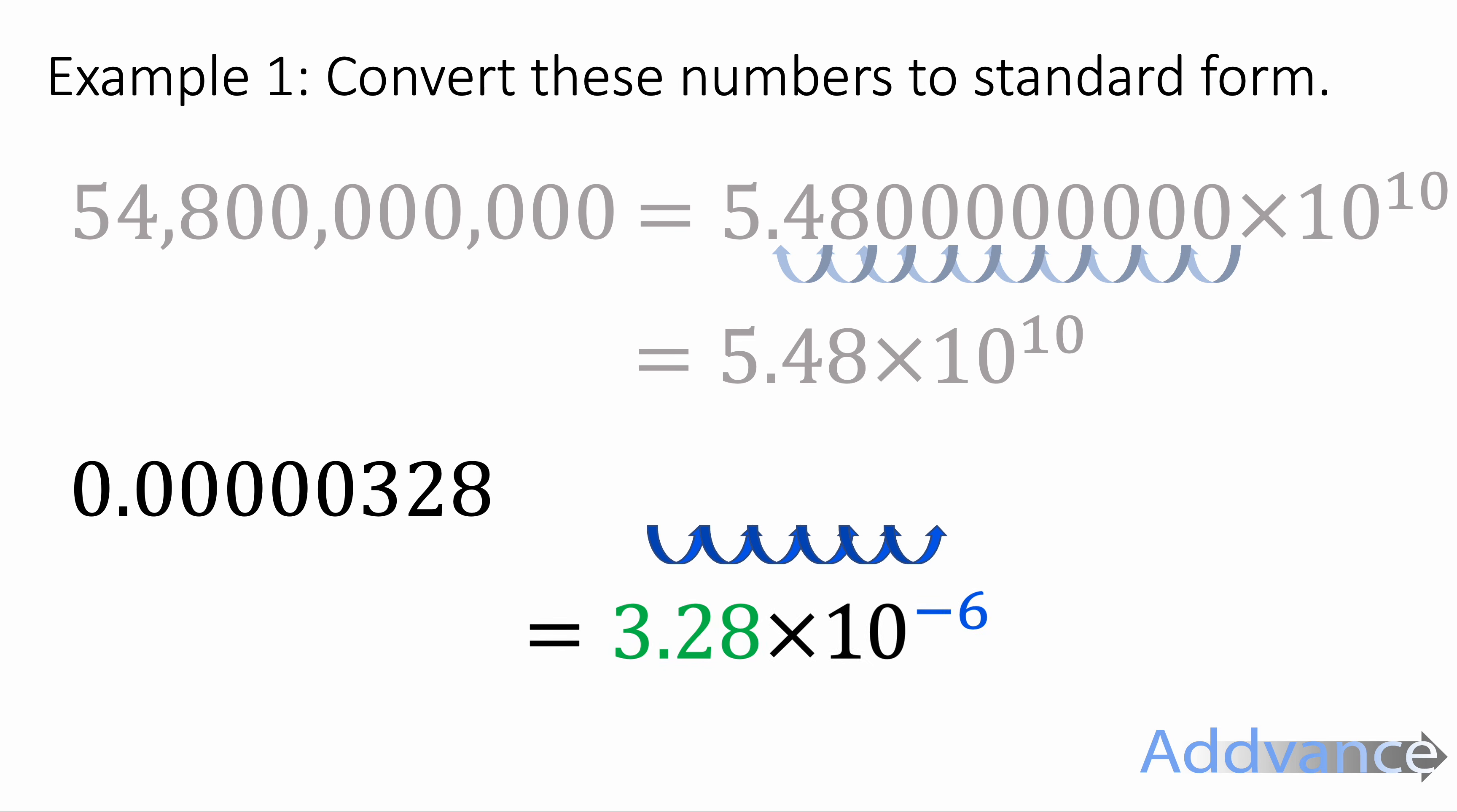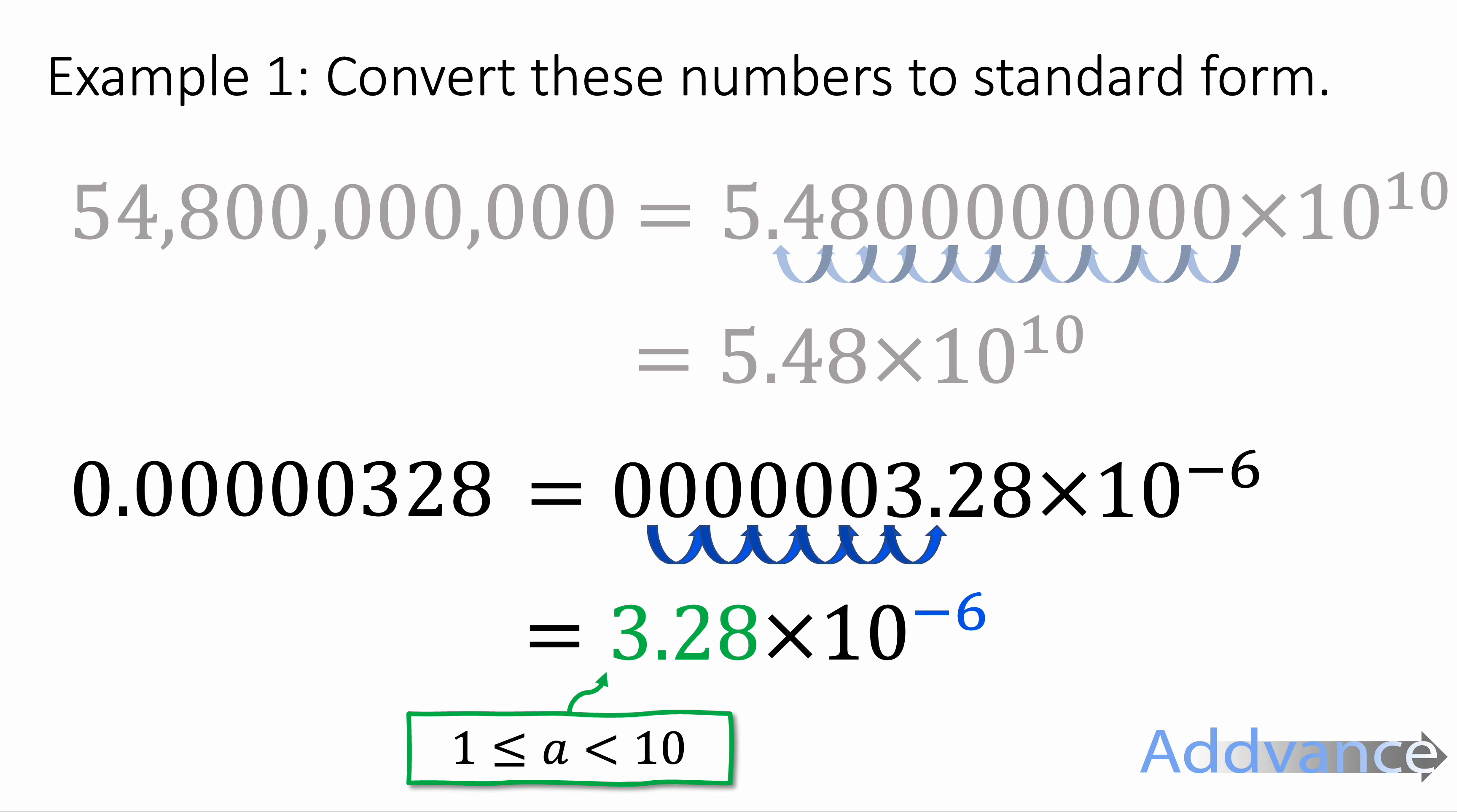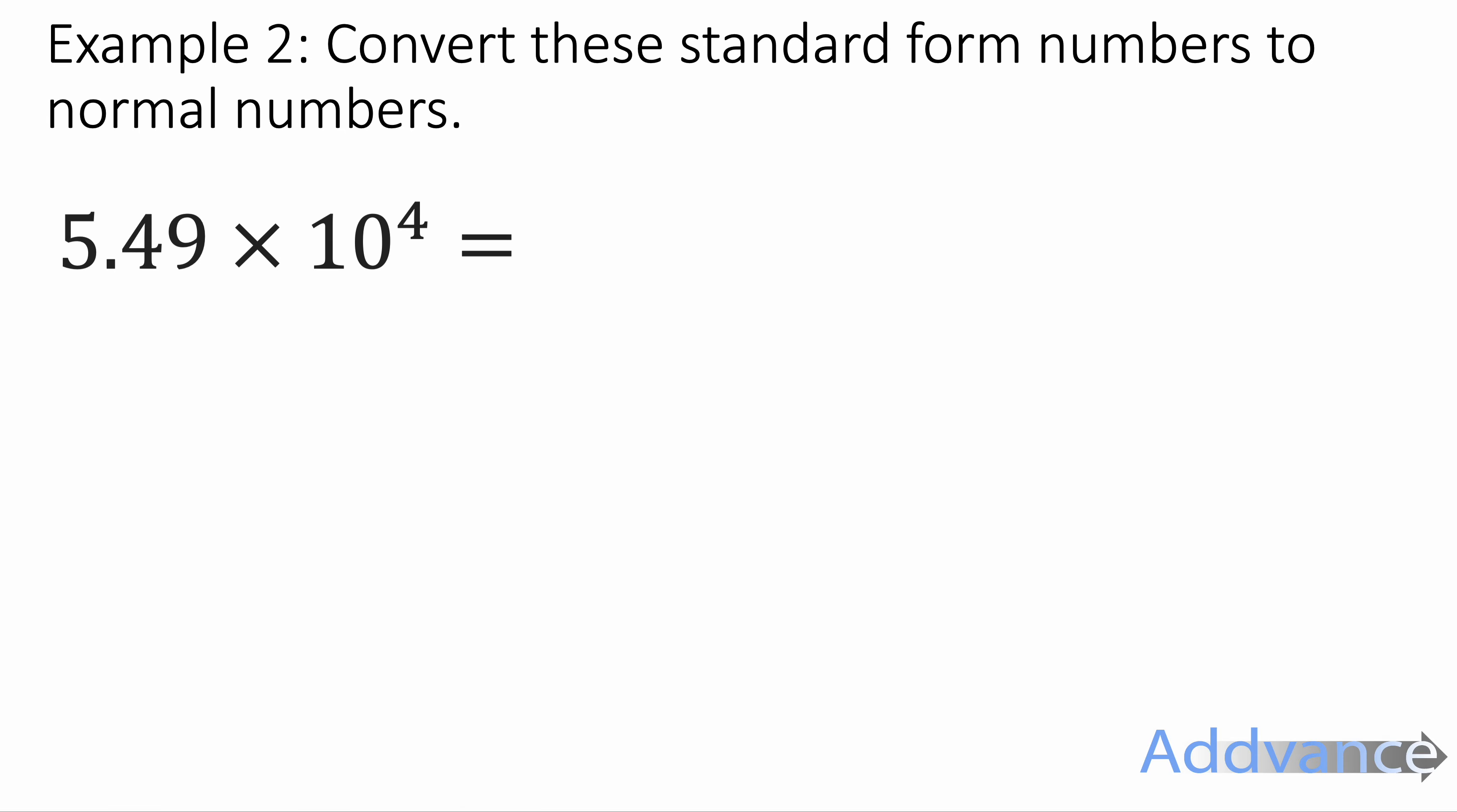Now we're going to do the same with the decimal at the bottom. We're going to move a decimal until we get a number between 1 and 10. And here we get 3.28. And to do that we've moved the decimal 6 places, but we've moved it the other direction. We've moved it to the right. And so we get a negative power here. So we get the answer 3.28 times 10 to the power minus 6.